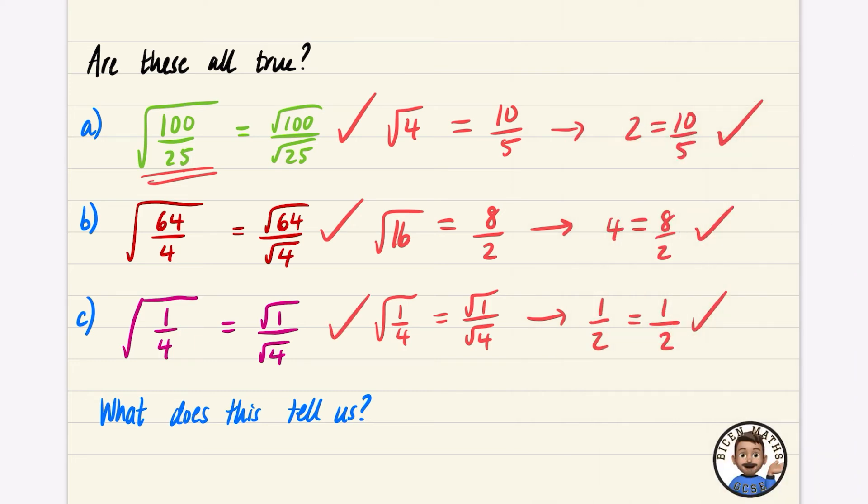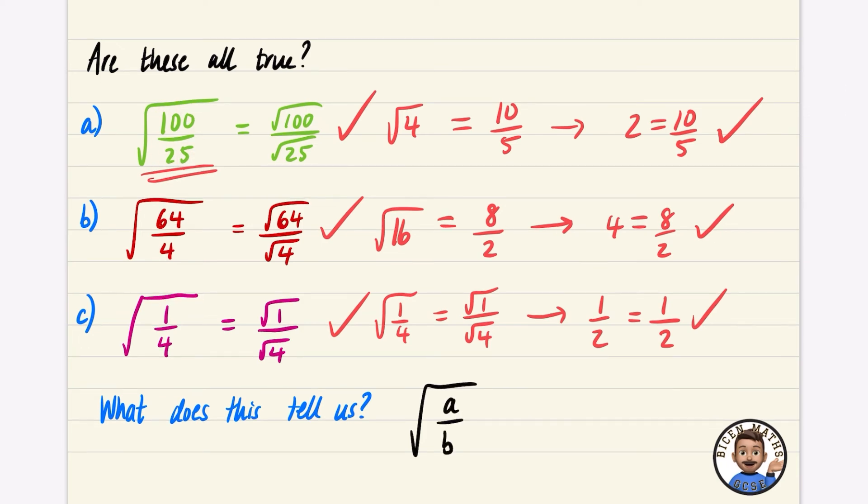So what does this tell us? This tells us that if you have something that's a fraction like this, with one number being divided by another number, it's the same thing as doing the square root of that number divided by the square root of the other number. These two things are all equivalent to each other.